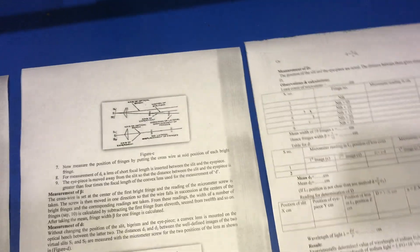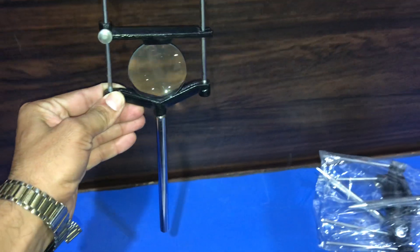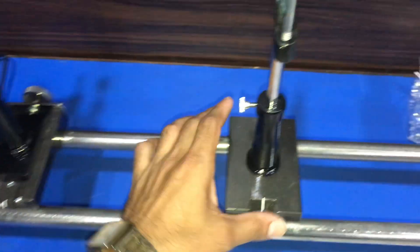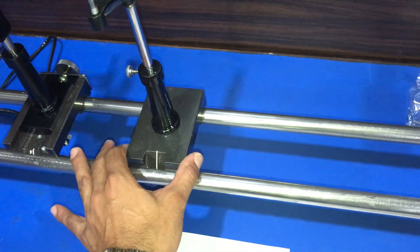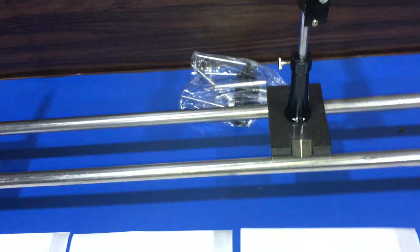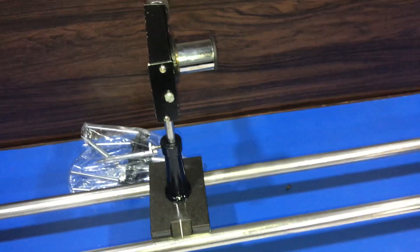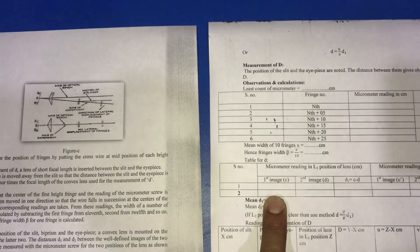In the next step, we determine the distance between the two sources. For that, we use the convex lens of focal length 10 cm. We insert the lens in the fourth upright and shift it such that when we observe from the eyepiece, we get two parallel sources of light. We calculate the distance between the two sources with the help of the micrometer and note the reading in the table.